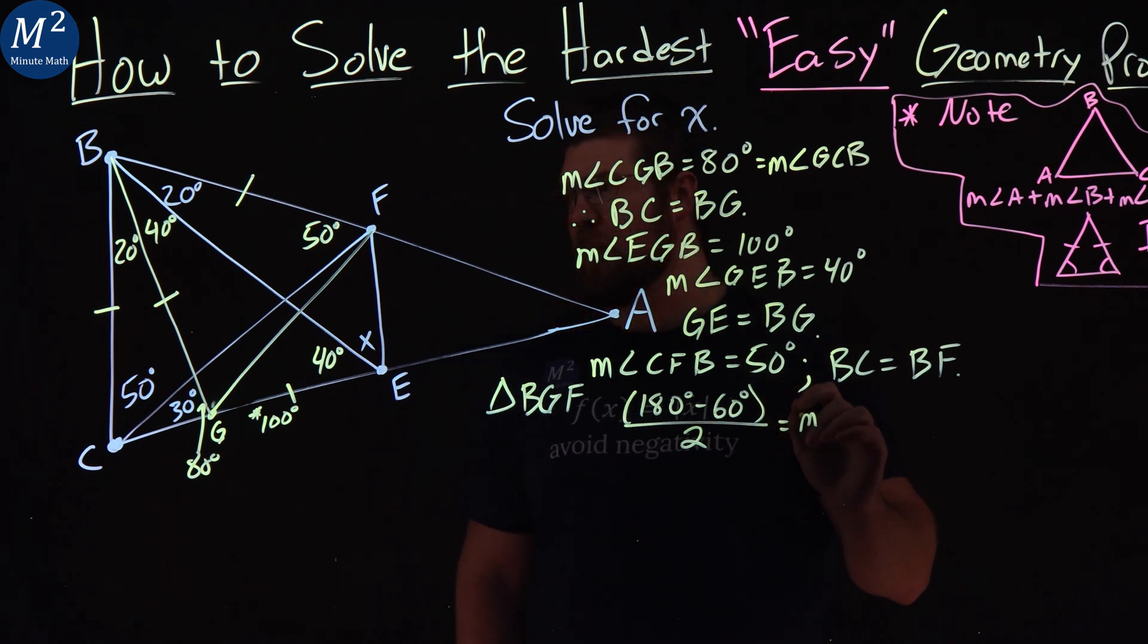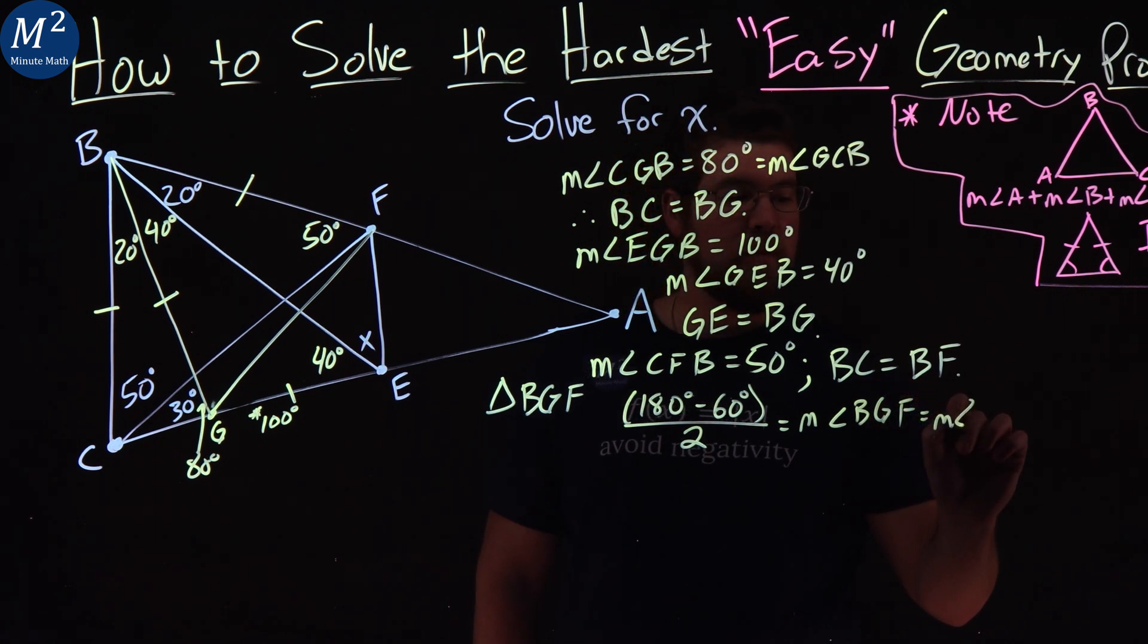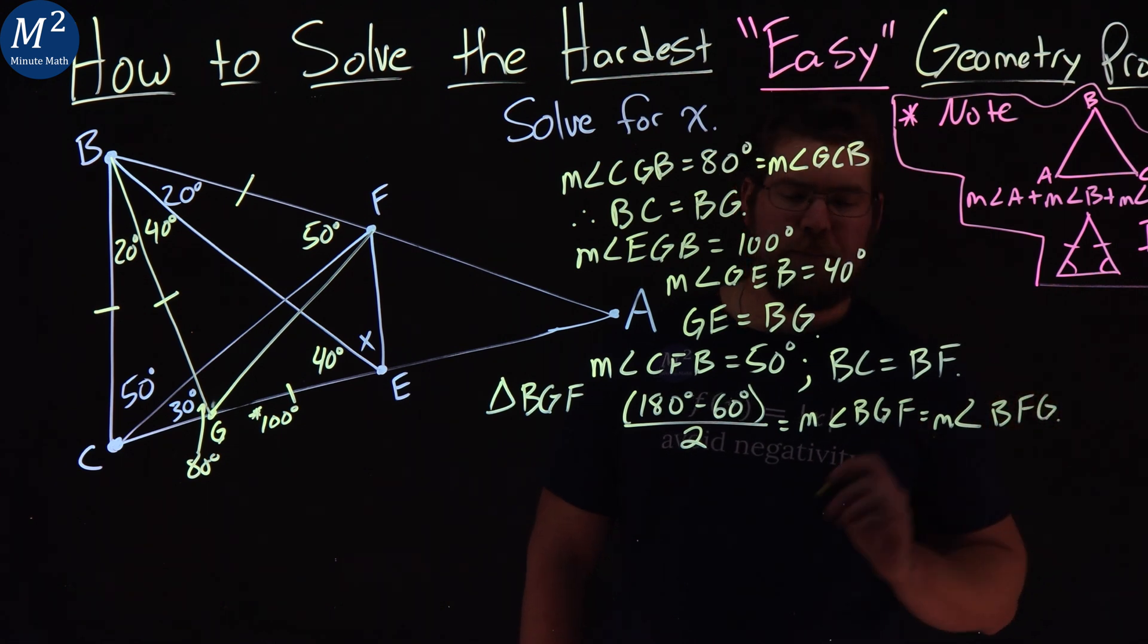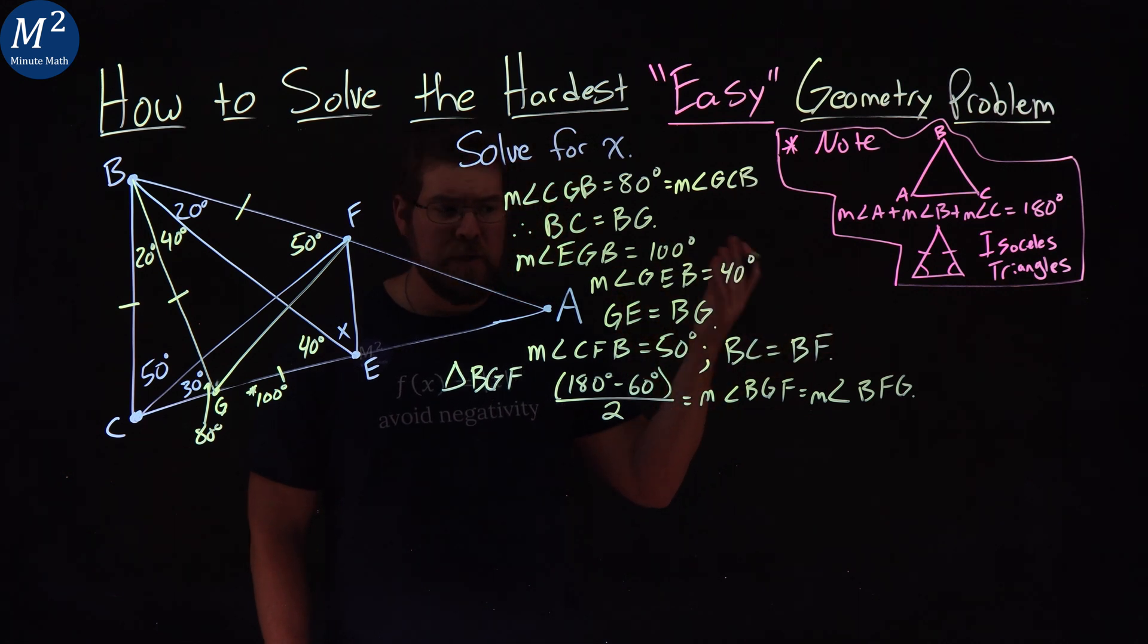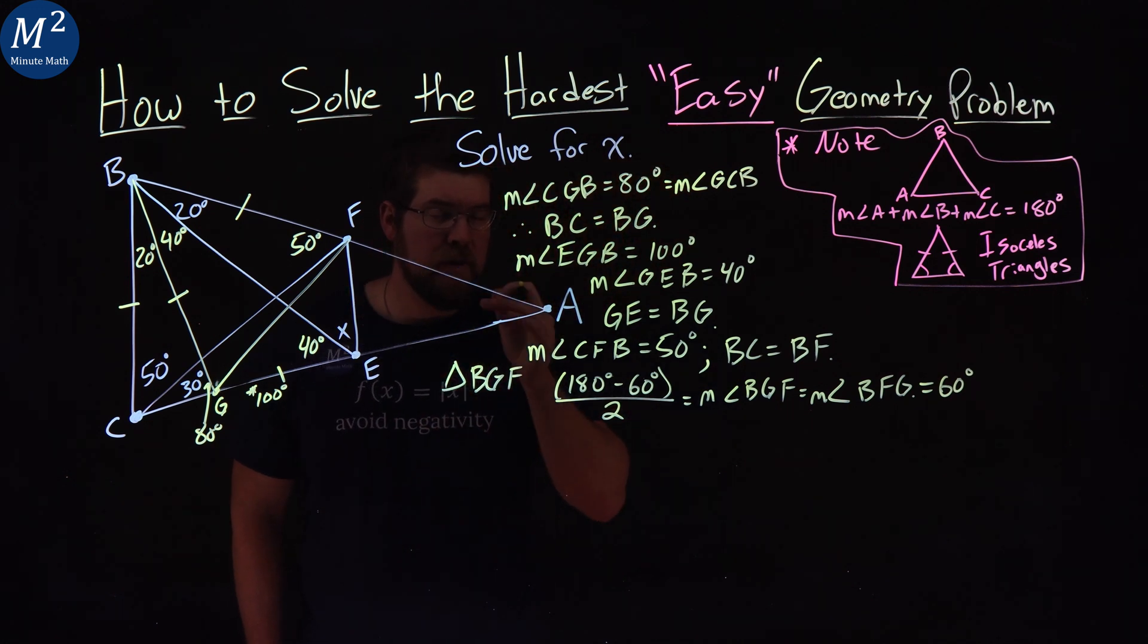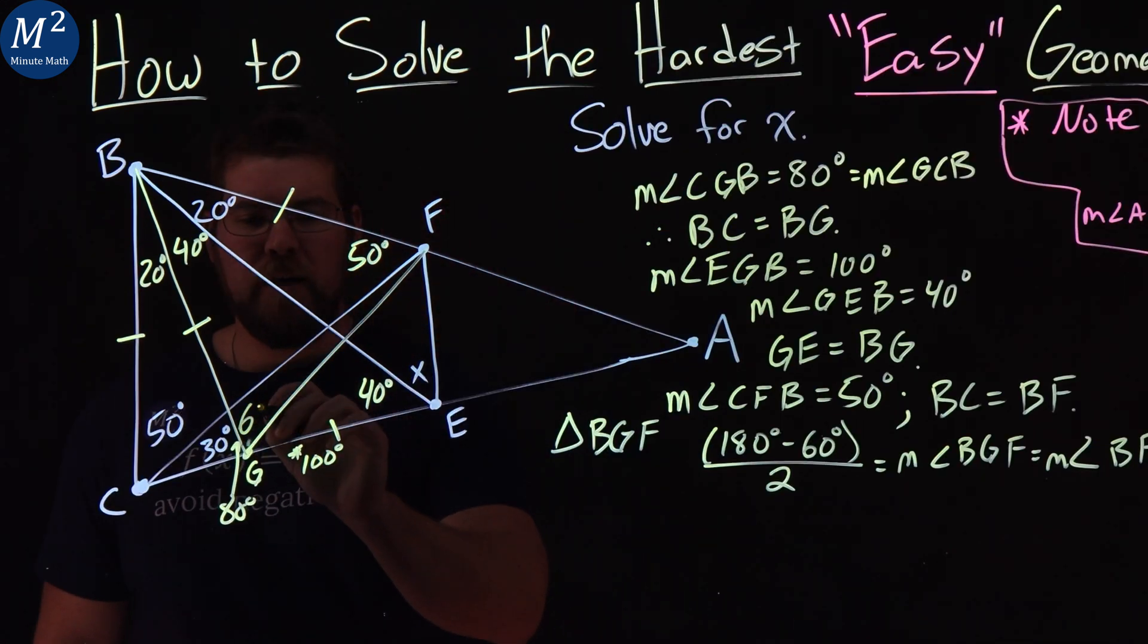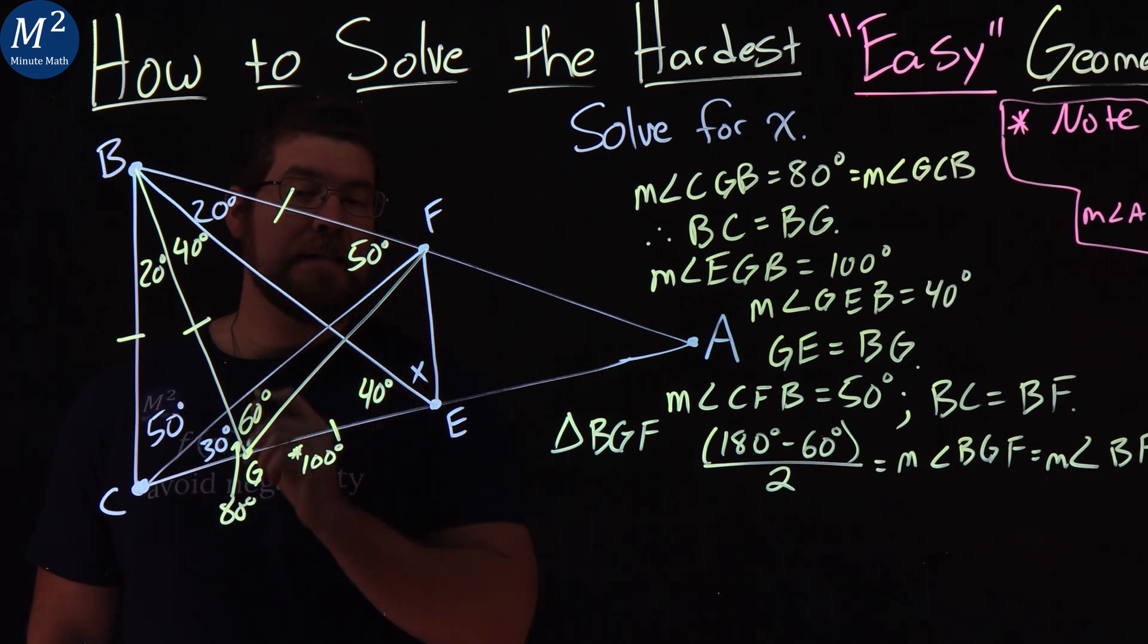And that has to equal the measurement of, let's say, BGF, which is equal to the measurement of angle BFG. The big friendly giant. And what does that come out to be? Well, 180 minus 60 is 120 divided by two is 60 degrees. So actually what we have here is not only an isosceles triangle, but an equilateral triangle. We have 60 degrees right here. And 60 degrees there.